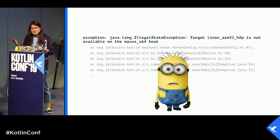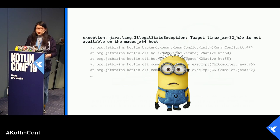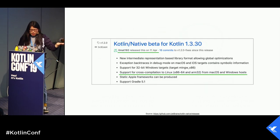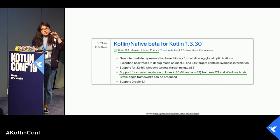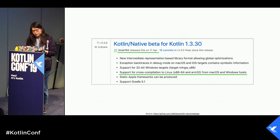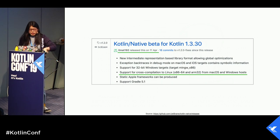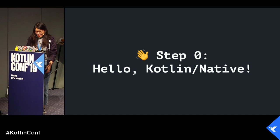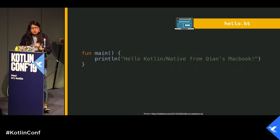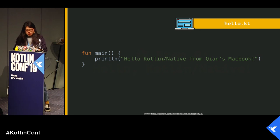Right away the compiler told me the target was not available on my host — meaning you couldn't do cross-compilation from MacBook to Raspberry Pi. That was the first hit of frustration. Then two months later in April, I checked the news and realized that in Kotlin Native 1.3.30, they actually released support for that. That was a moment of relief because I had a conference coming up. The first step was to make a typical hello world work. I started writing my first main function in Kotlin Native which would later run on Raspberry Pi.